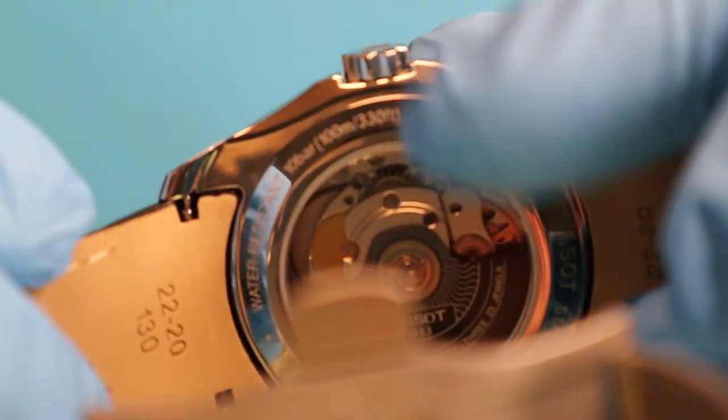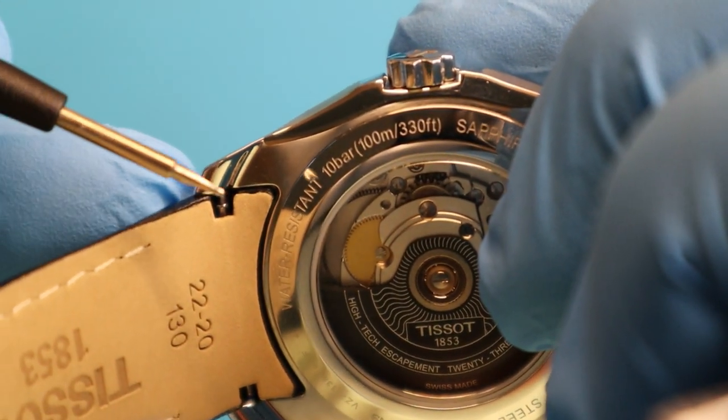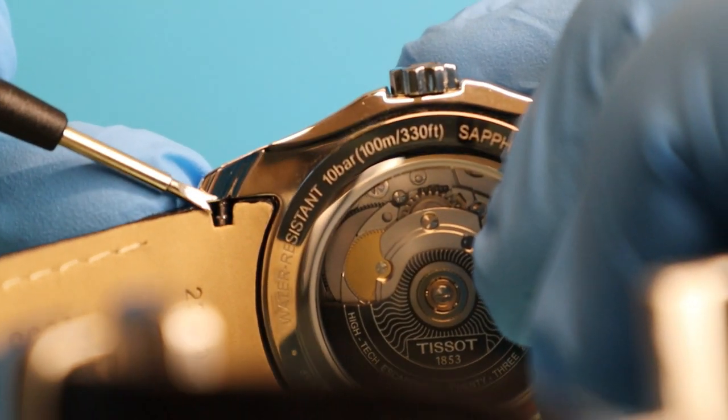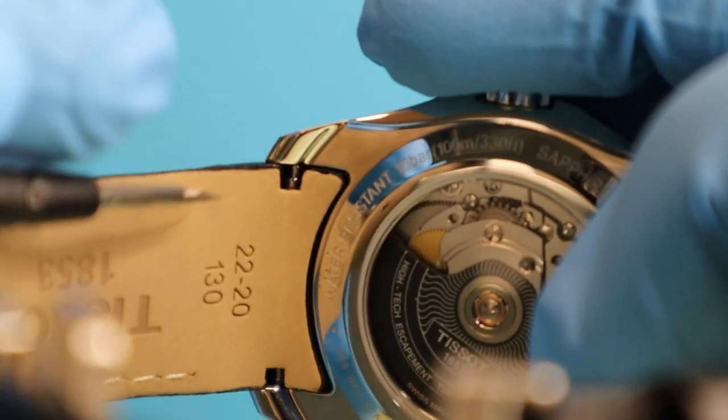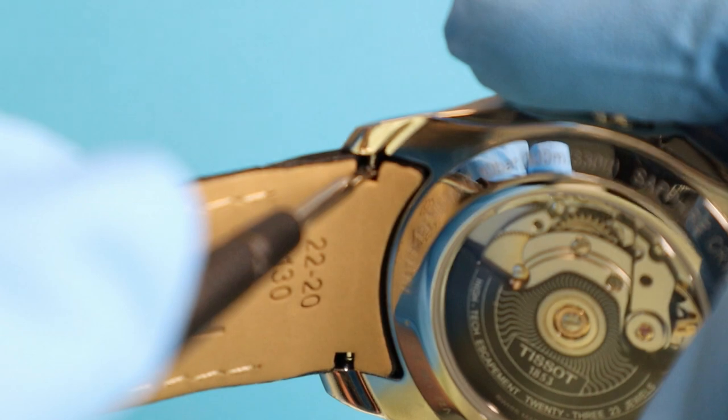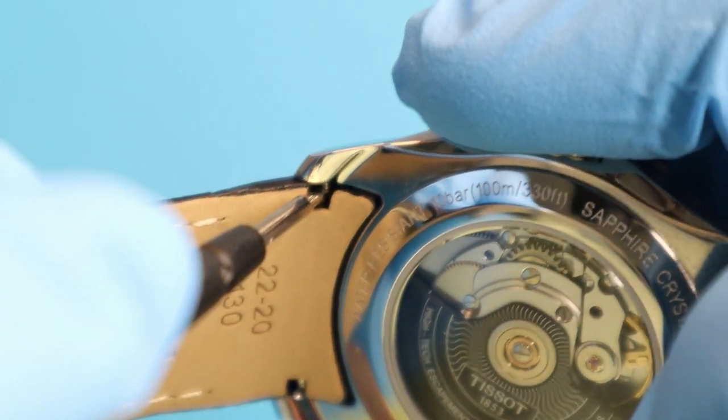Right down in here on the edge of your band there's usually going to be a little access hole where you can get to the spring. We'll take our tool and insert it in this access hole and just push down.